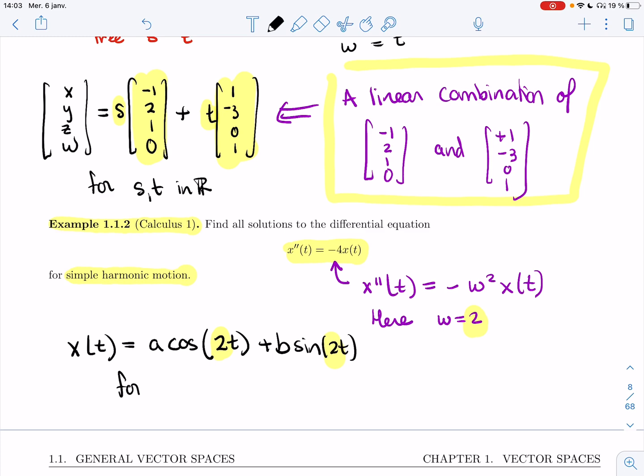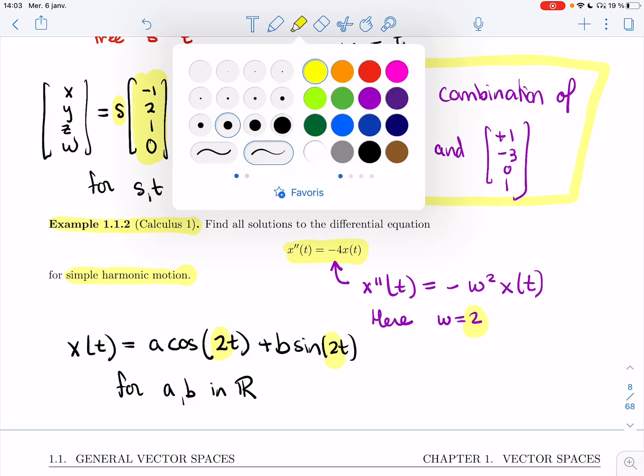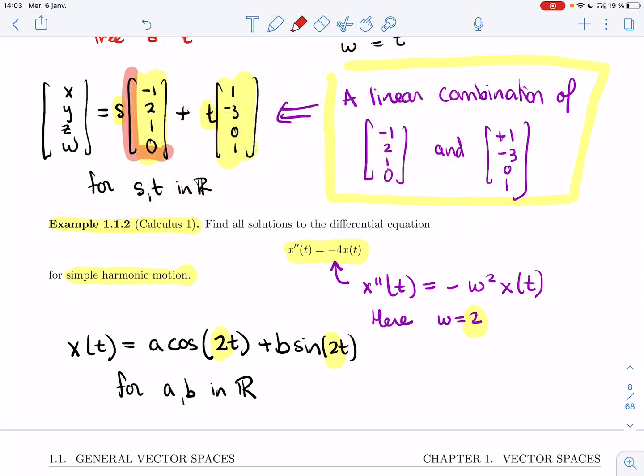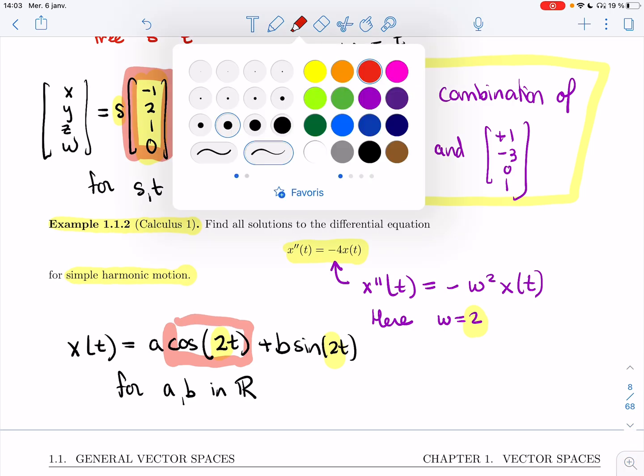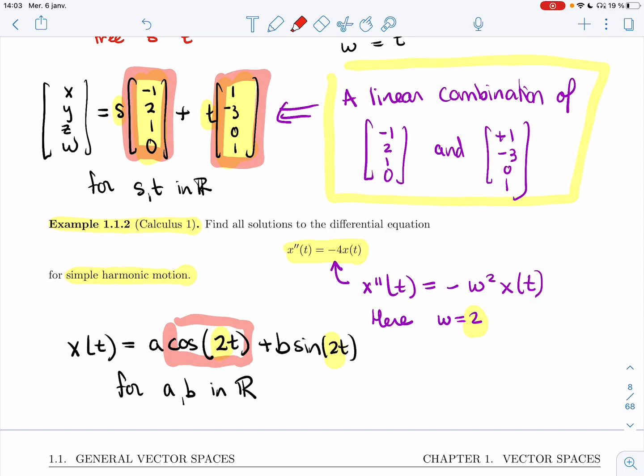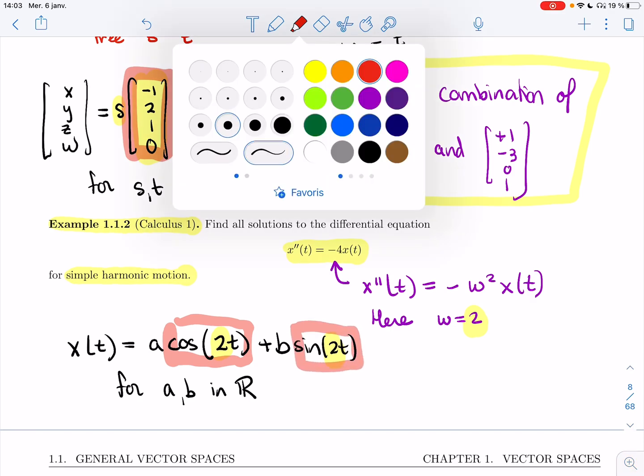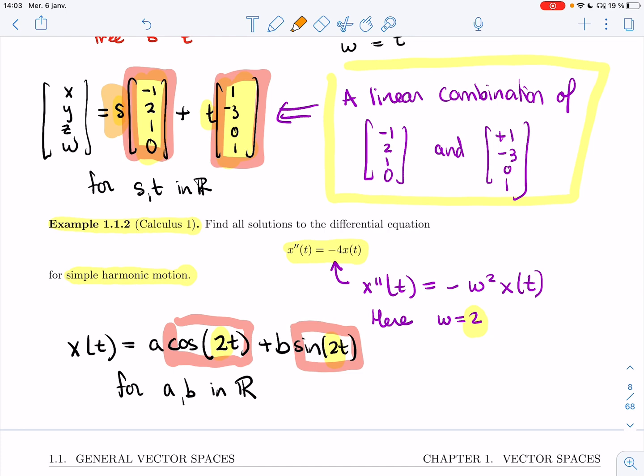And here again, a and b are just any real number. This is a bit less standard because in Linear 1, when we looked at linear combinations, we were really looking at linear combinations on vectors. But this is almost the same shape. Over here I have one function, and then I have a second function, and in front, in both cases, I'm just multiplying by any real number I choose.